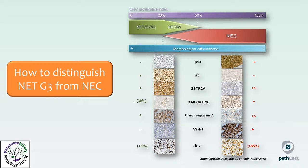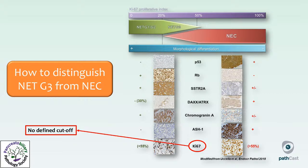NEC is favored by the presence of an associated non-neuroendocrine component, loss of RB expression or abnormal expression of P53 at immunohistochemistry, and clinical evidence of very high-grade aggressive neuroendocrine behavior. Immunohistochemistry with P53, RB, somatostatin receptors, and DAXX/ATRX may be of help. The expression pattern of chromogranin A — expressed in a dot-like fashion in poorly differentiated NECs — may also help. No defined upper Ki67 cutoff for NET G3 has been established; the proposed 55% cutoff in morphological terms has limited value.